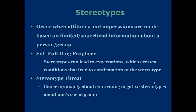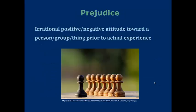A stereotype threat is a concern or anxiety about confirming negative stereotypes about one's social group. For example, if you're Asian and there's a stereotype that you're good at math, you might have anxiety in your math class because of the expectation that people have for you to be good at it, even though you struggle. Prejudice is an irrational positive or negative attitude toward a person, group, or thing prior to an actual experience.